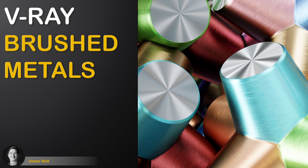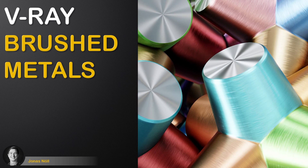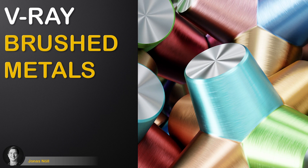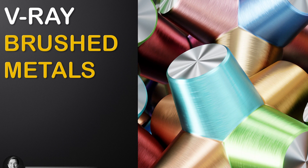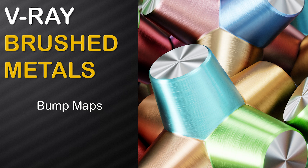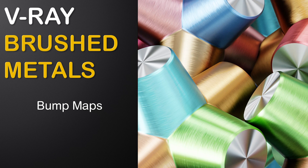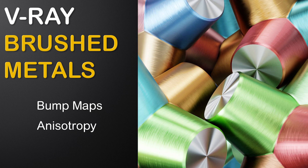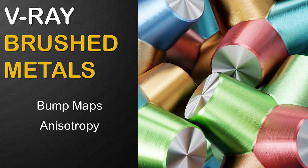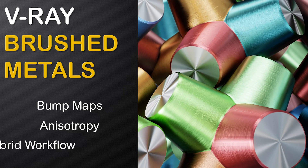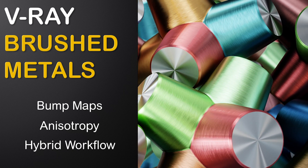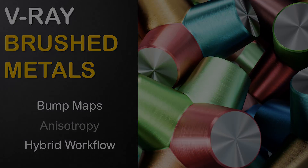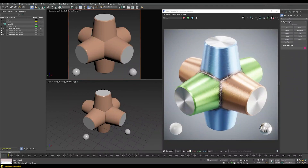In this tutorial you will learn how to build the most commonly used brushed metal shaders. We will first use bump maps for basic surface imperfections, then learn why using the built-in shader anisotropy is superior, and finally develop a hybrid workflow to get the best of both.